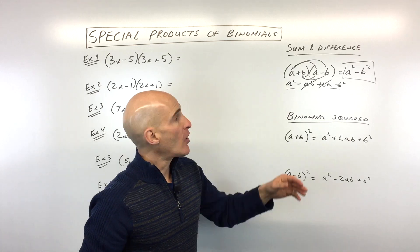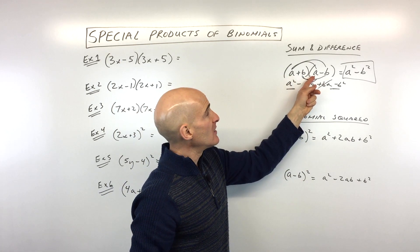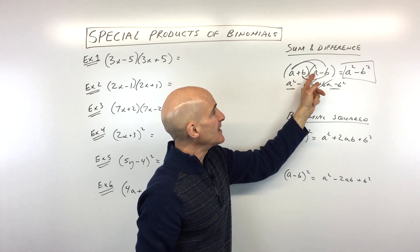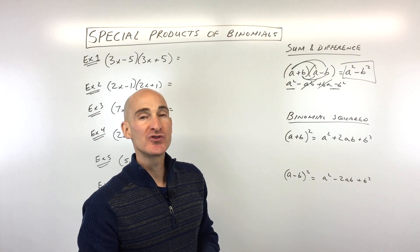And you can see we're left with a squared minus b squared. So when you see a pattern like this, all you have to do is multiply the a's together, the first terms, and the last terms. You don't have to worry about the inner product and the outer product because those are going to cancel out.